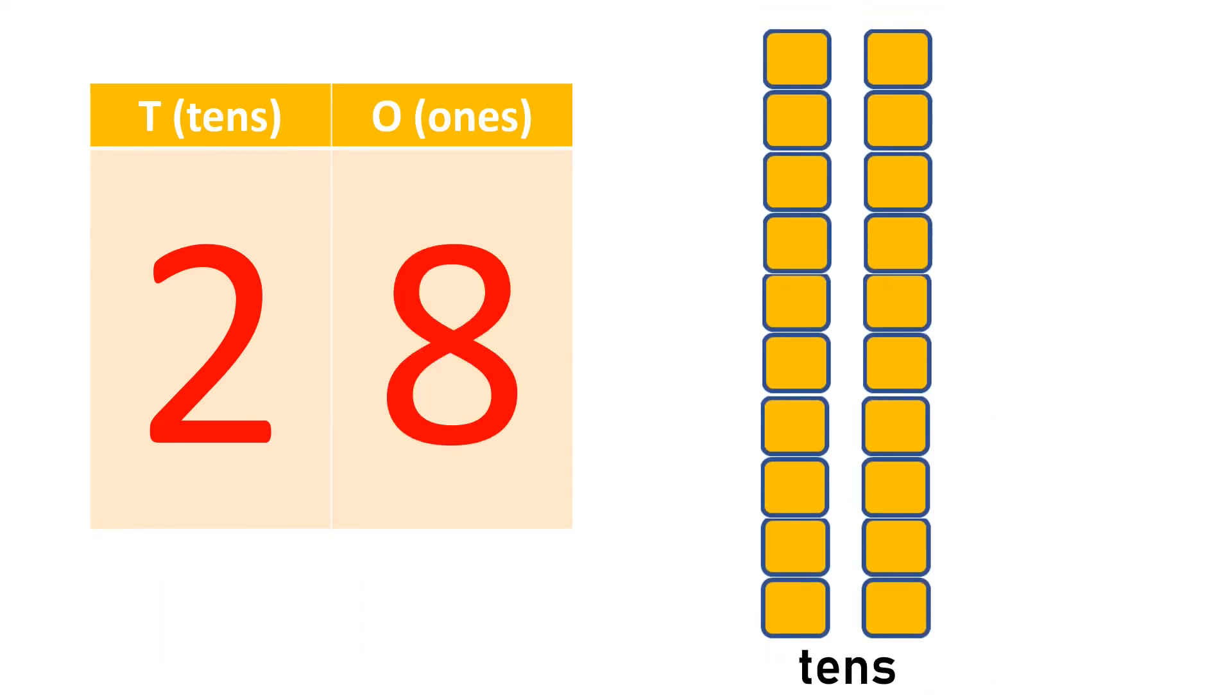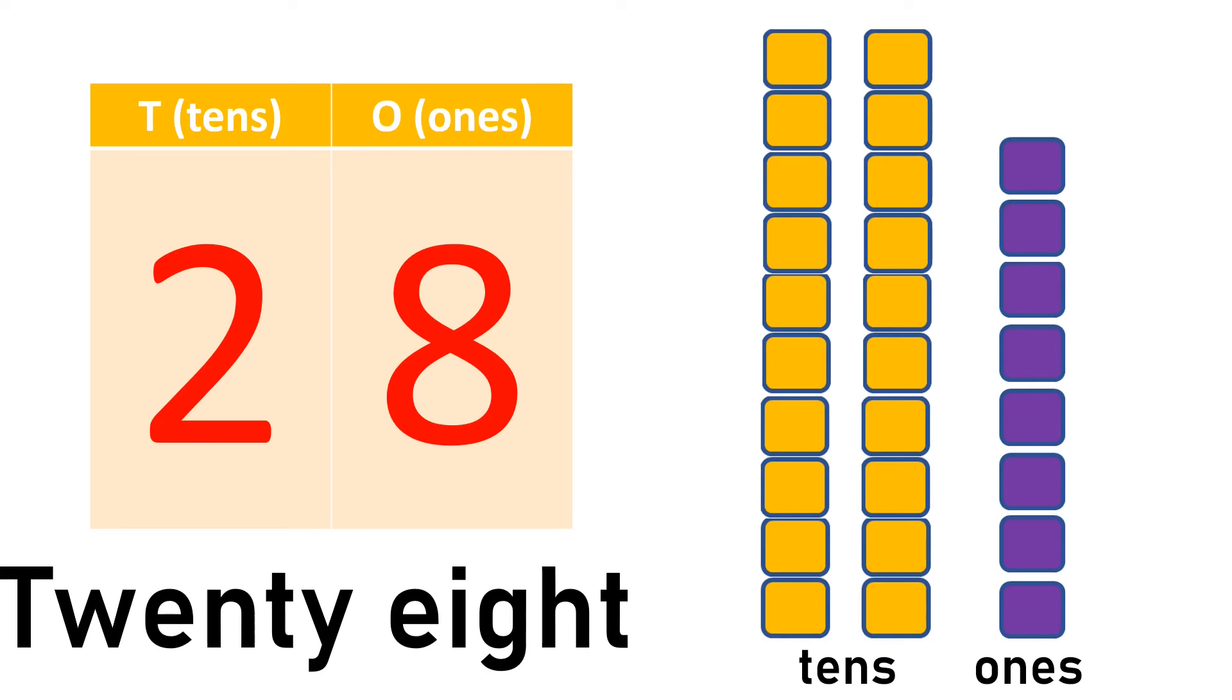2 tens and 1, 2, 3, 4, 5, 6, 7, 8, 8 ones makes 28, TWENTY-EIGHT.